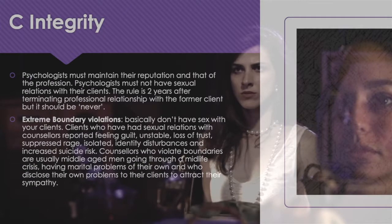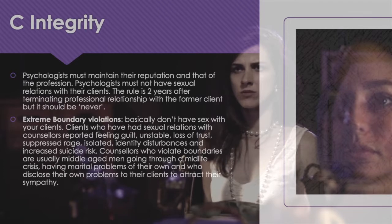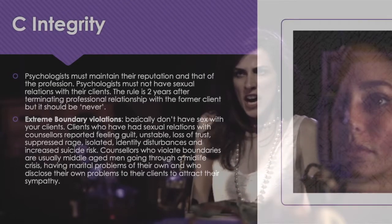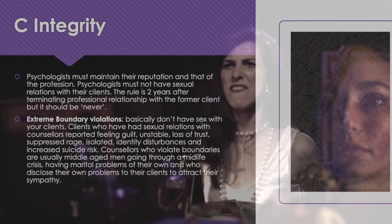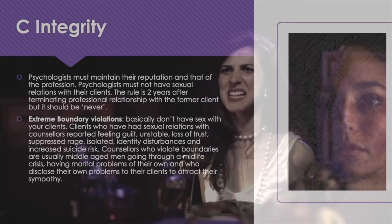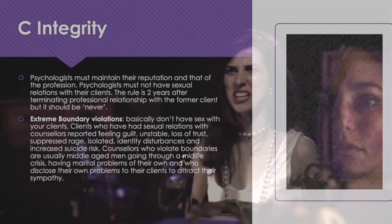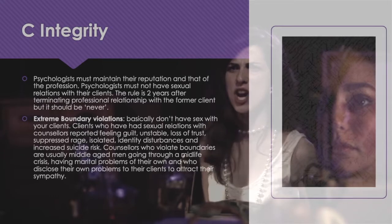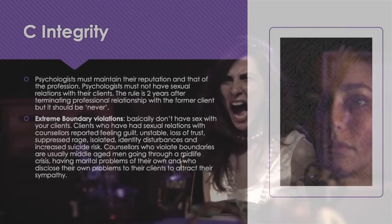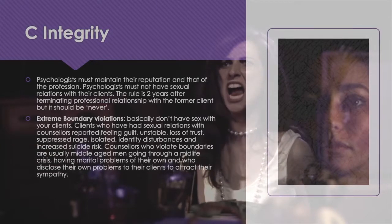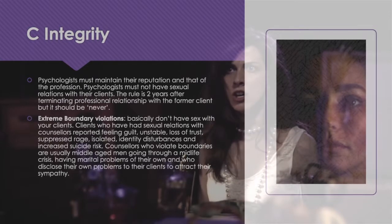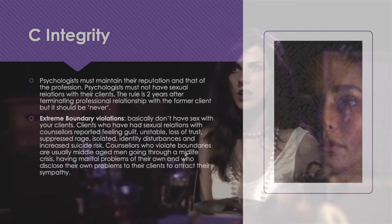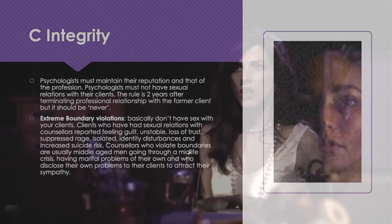C is Integrity — psychologists must maintain their reputation and that of the profession. Psychologists must not have sexual relations with their clients. The rule states two years after terminating a professional relationship with a former client, but it should be never. These are extreme boundary violations. Clients who have had sexual relations with counsellors reported feeling guilty, unstable, having a loss of trust, suppressed rage, isolated identity disturbances, and increased suicide risk. Counsellors who violate boundaries are usually middle-aged men going through a mid-life crisis, having marital problems of their own, and who disclose their own problems to their clients to attract their sympathy.